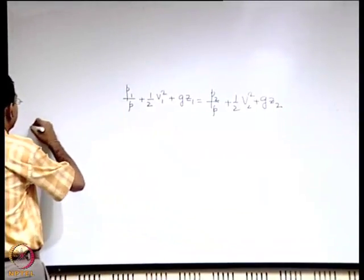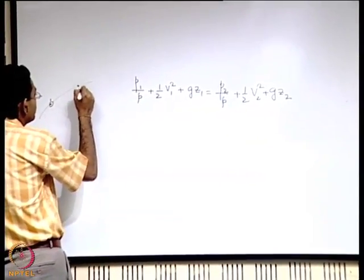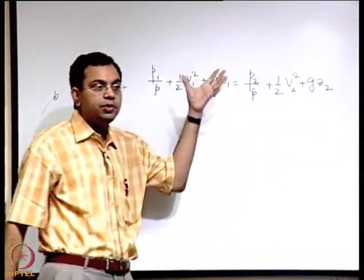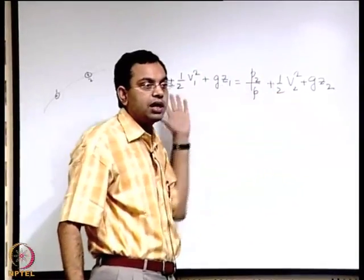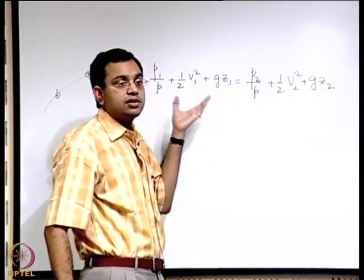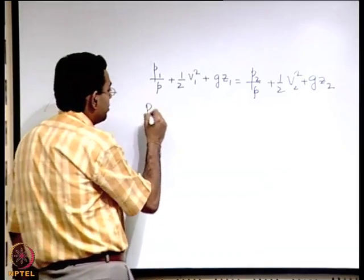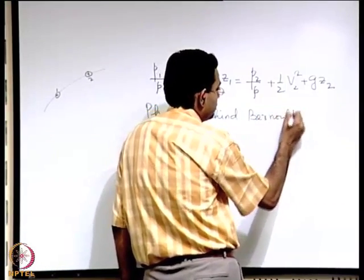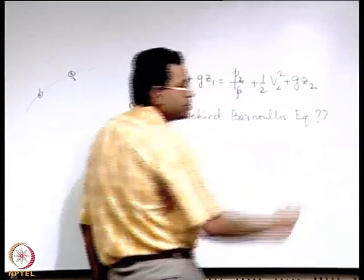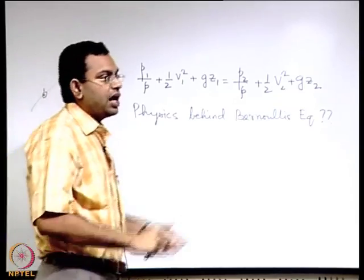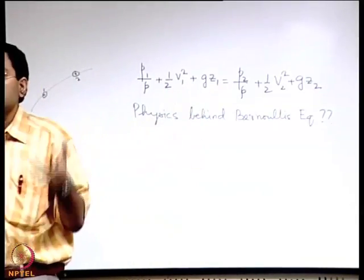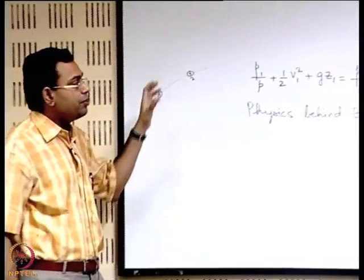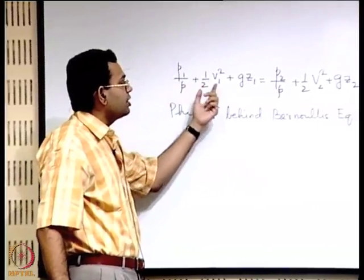Now, considering the equation along a streamline between points 1 and 2, what does this equation say? That is very important. After all, we are not just bothered about plugging in values to get a numerical answer. What is even more important is to appreciate the physics behind Bernoulli's equation. Once we appreciate the physics properly, we will be able to utilize this equation even in cases where it may not be exactly valid, but in a somewhat approximate sense. To understand the physics, it is better to appreciate the physical consequence of each and every term in the equation.